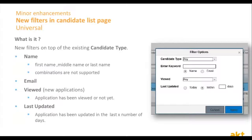Another minor enhancement, which is quite nice, is additional filters in the candidate list page. Till now, you could search by name only. From this day on, you can search by first name, middle name, or last name — though the combination is not supported yet. You can also search by email. Two new additional fields are the option to select only applications which have been viewed already or not, so you can distinguish between new candidates and viewed ones, and a last-updated field showing when the candidate or application was last updated.